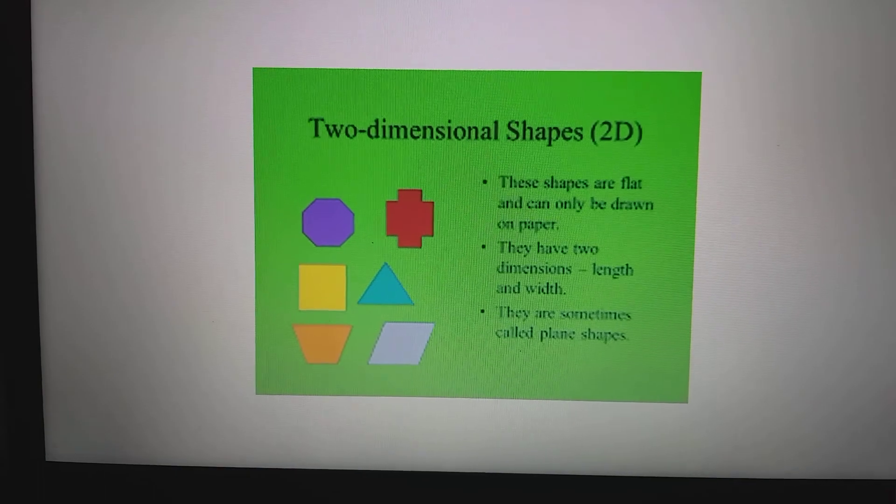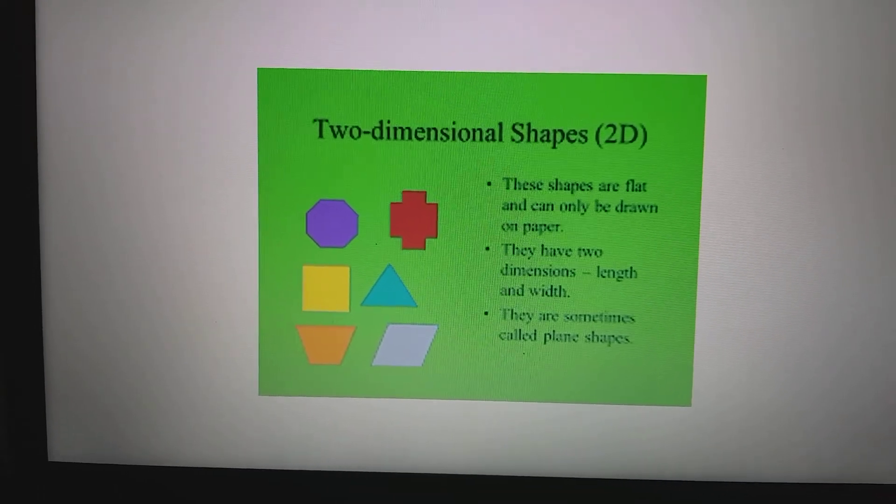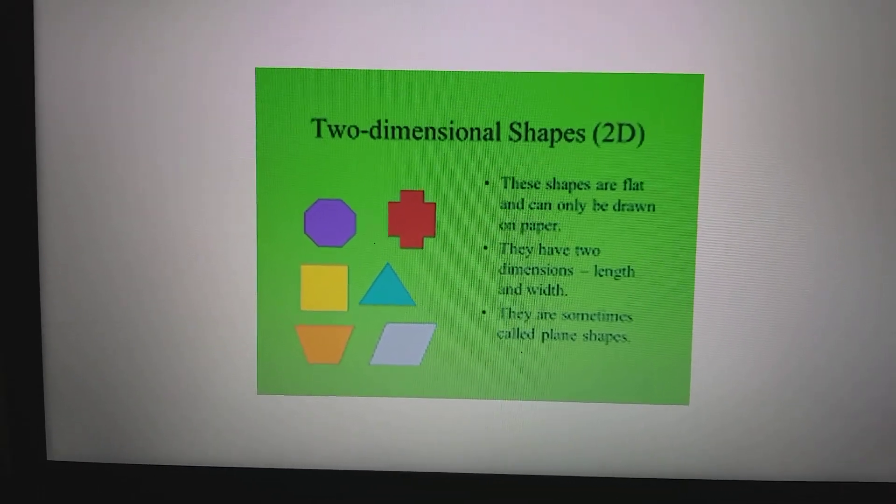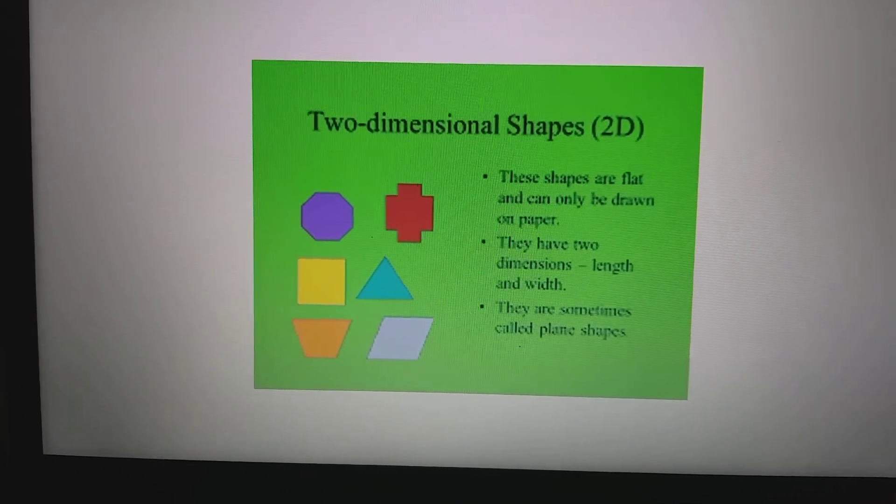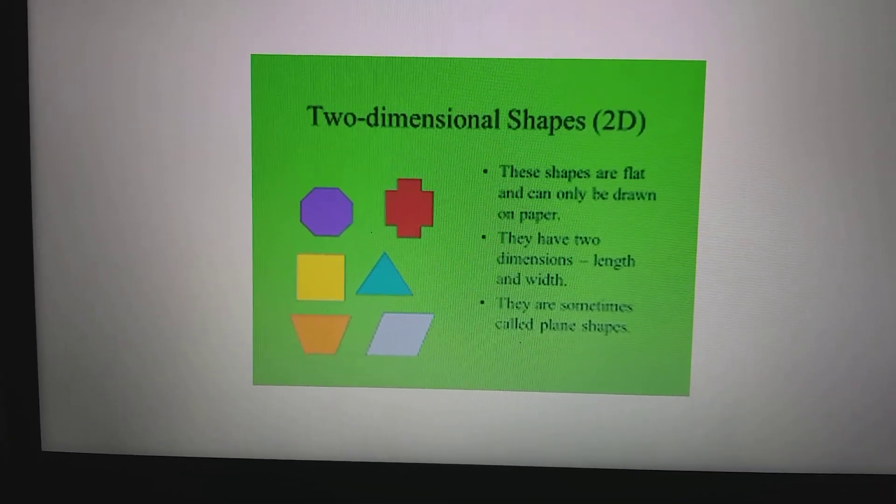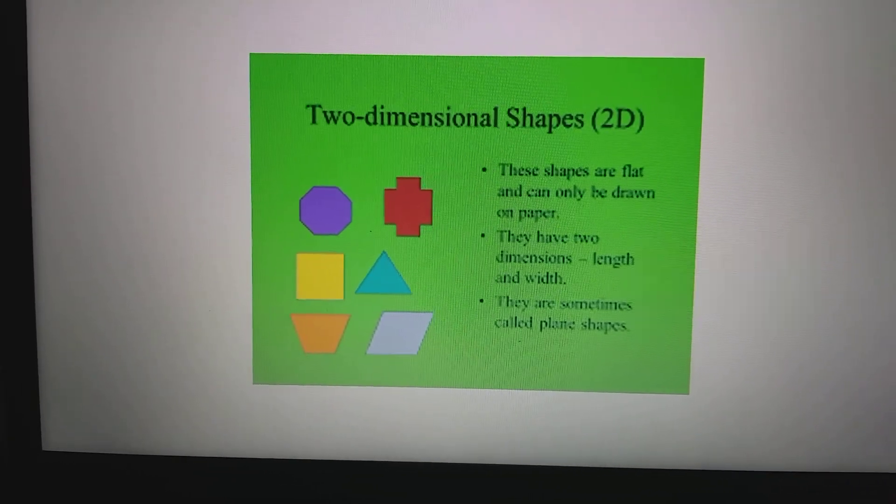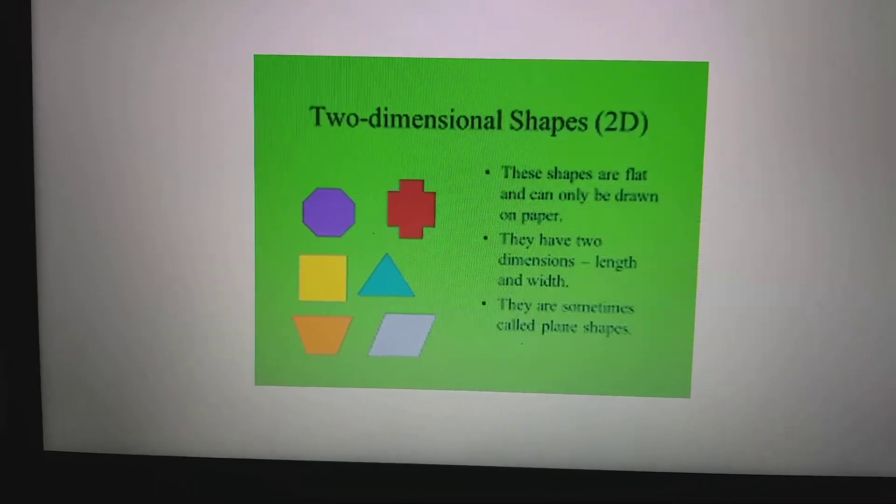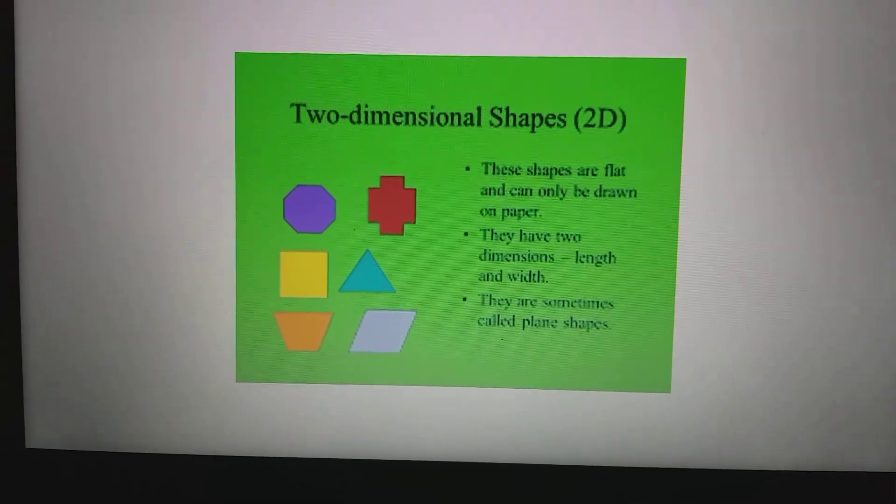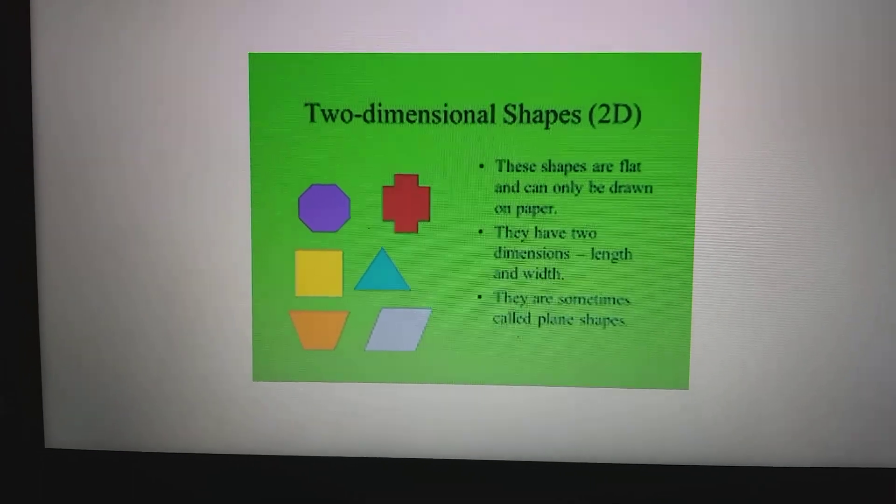Now you have learned about two dimensional shapes before and these are flat shapes that can be drawn on paper and they only have two dimensions which are the length and the width. Some of these shapes are like squares, circles, triangles that you have done in your lower classes.